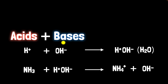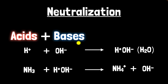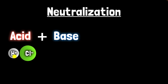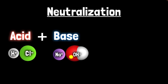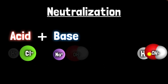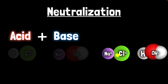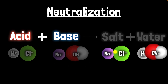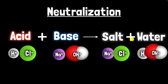Because acids and bases work in opposite ways, when we combine them, we say they neutralize each other, and this reaction is called the neutralization reaction. When they neutralize each other, we get water — but what else? Let's take a concrete example: when you combine HCl, which is an acid, with a base like NaOH, H and OH combine to give you water. But Na and Cl combine to give you NaCl, which is salt. So acids and bases react together to give you salt and water.